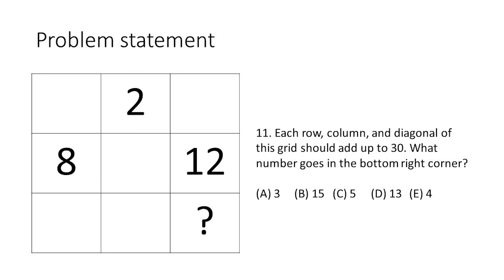The problem says: in each row, column, and diagonal of this grid should add up to 30. What number goes in the bottom right corner? The answer choices are: A) 3, B) 15, C) 5, D) 13, or E) 4.